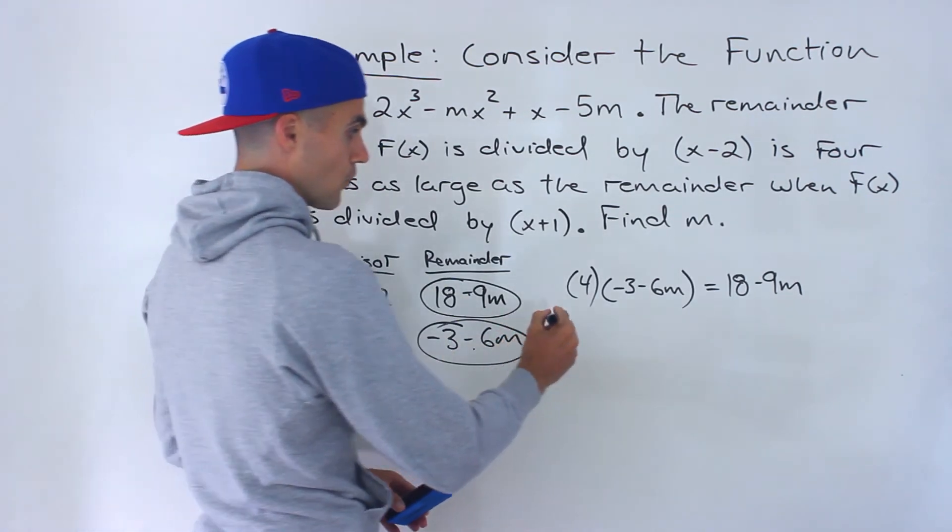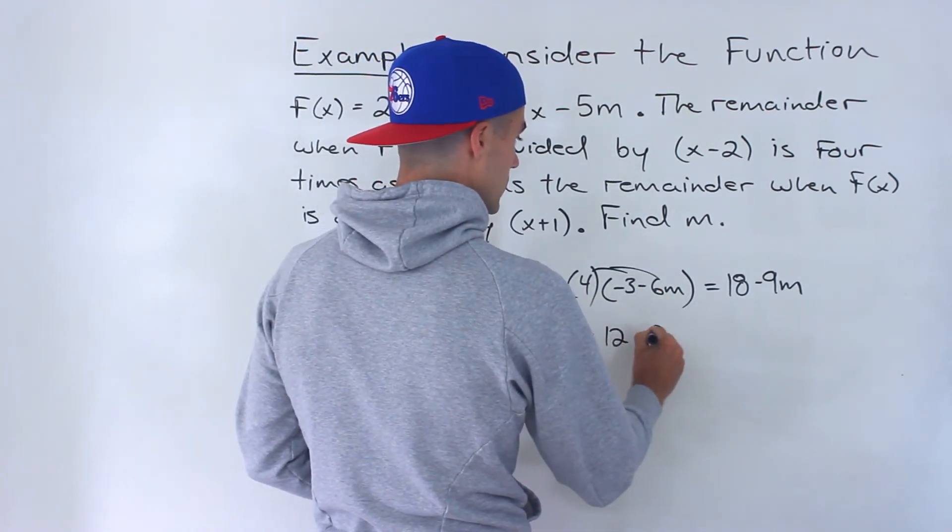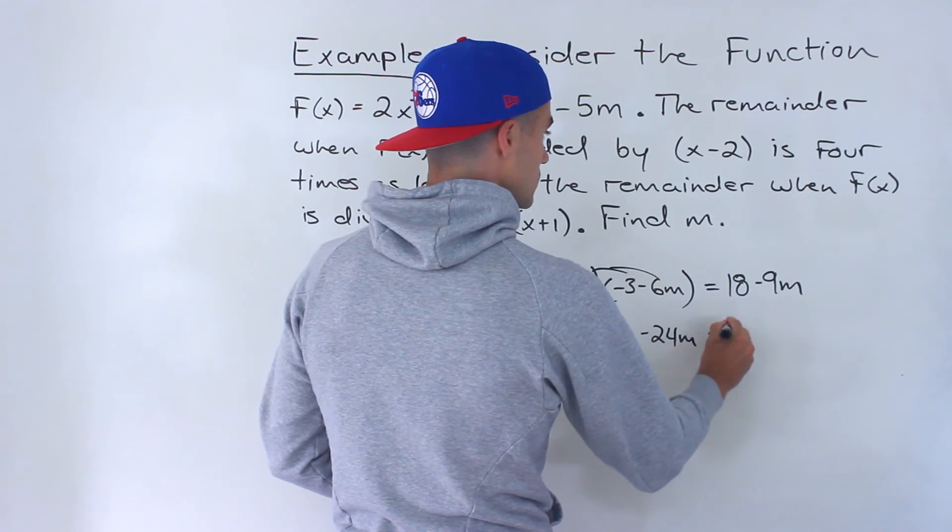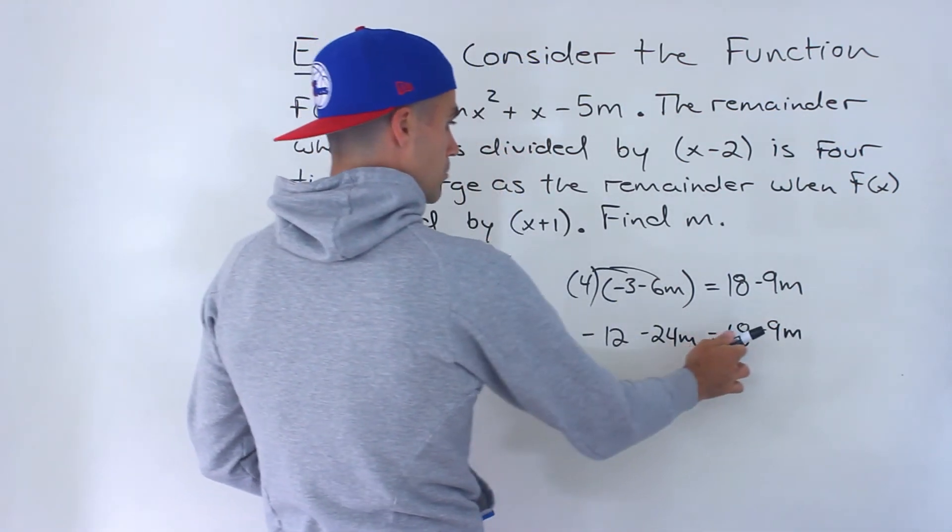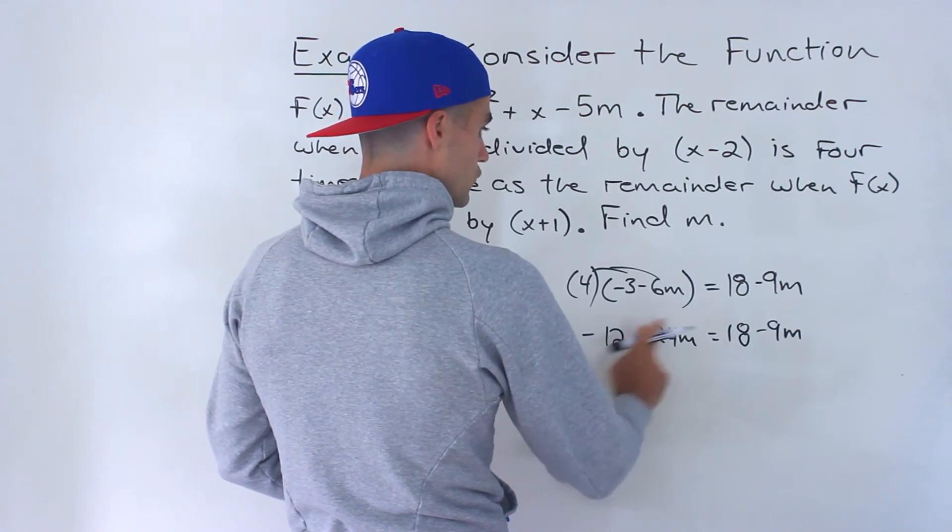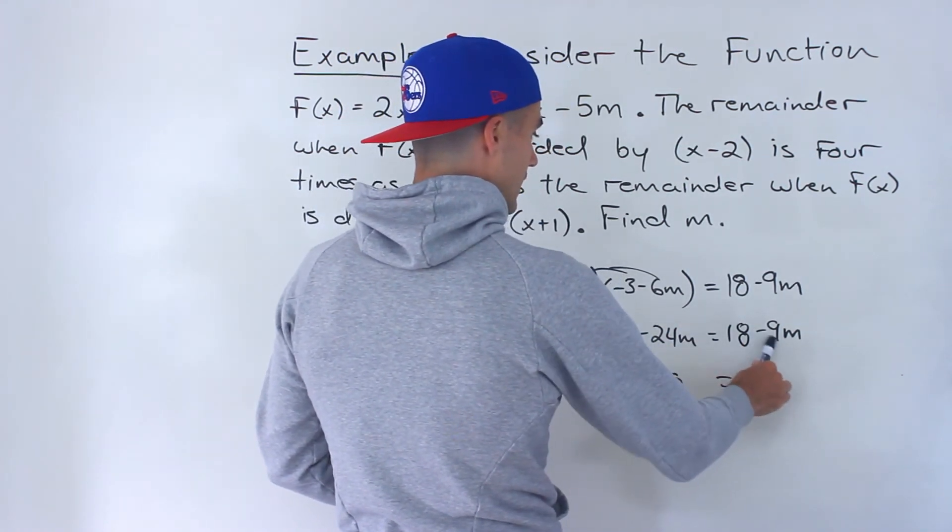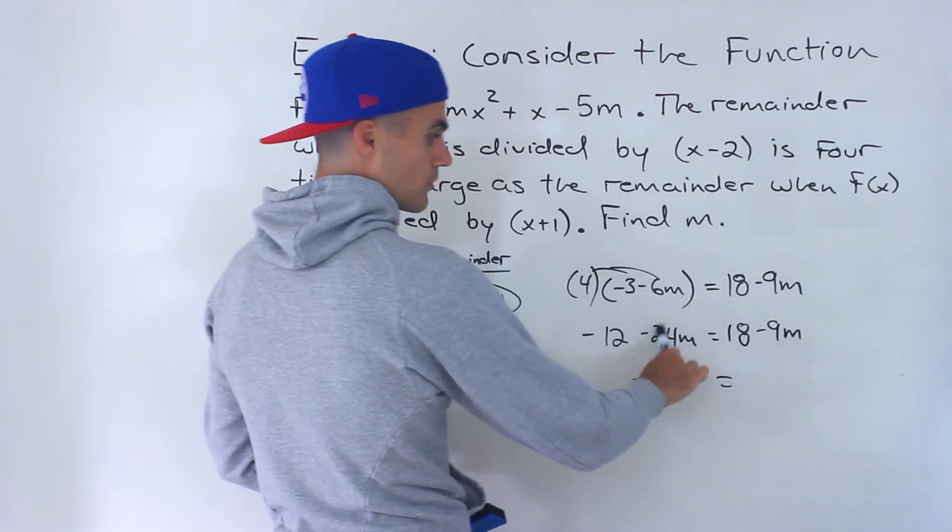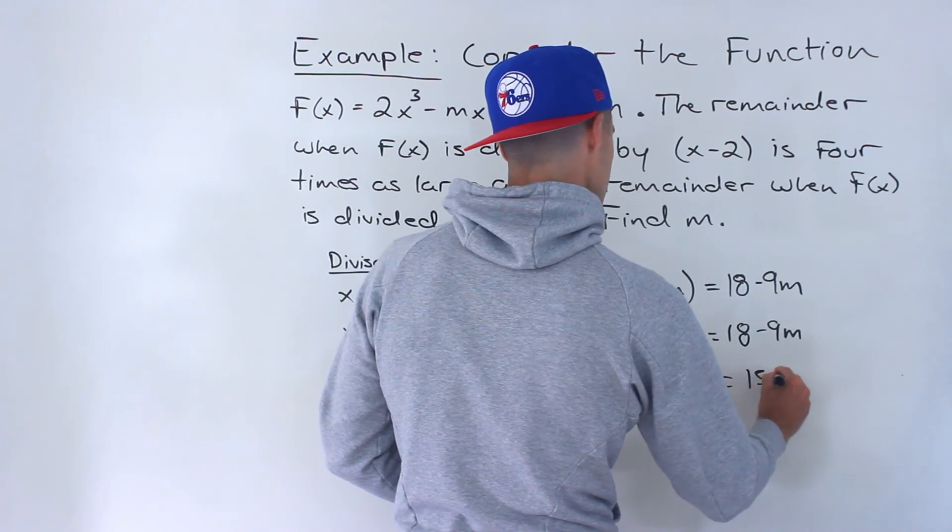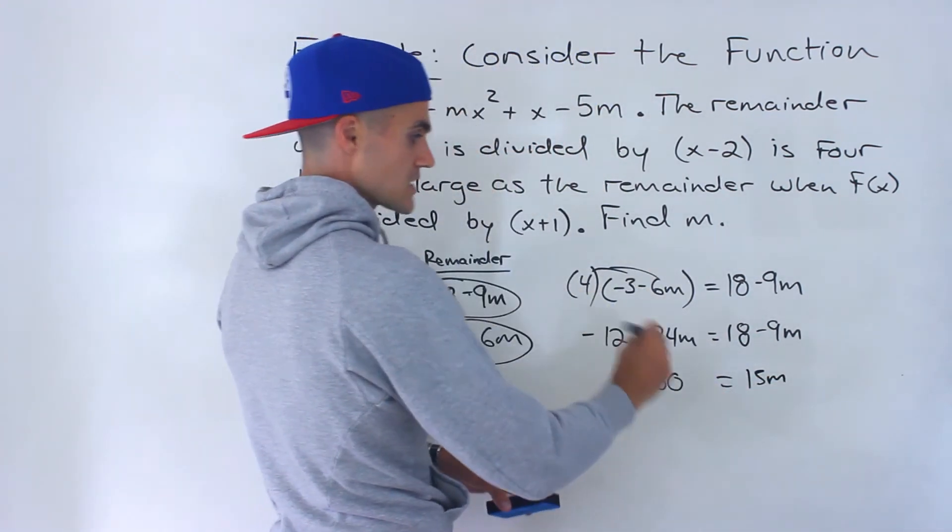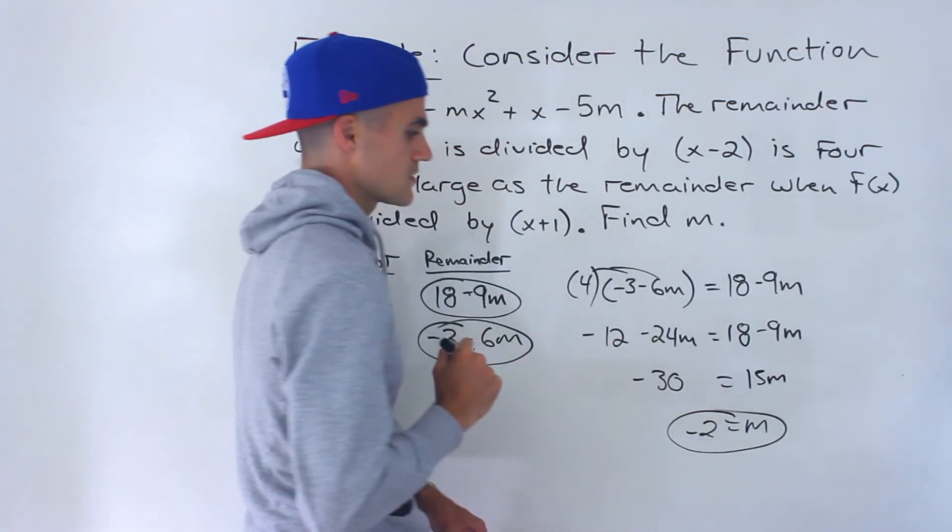Now we solve for m. Distributing the 4: -12 - 24m = 18 - 9m. Bring the 18 over: -12 - 18 is -30. Then -9m plus 24m gives positive 15m. So -30 = 15m. Divide both sides by 15: m = -2.